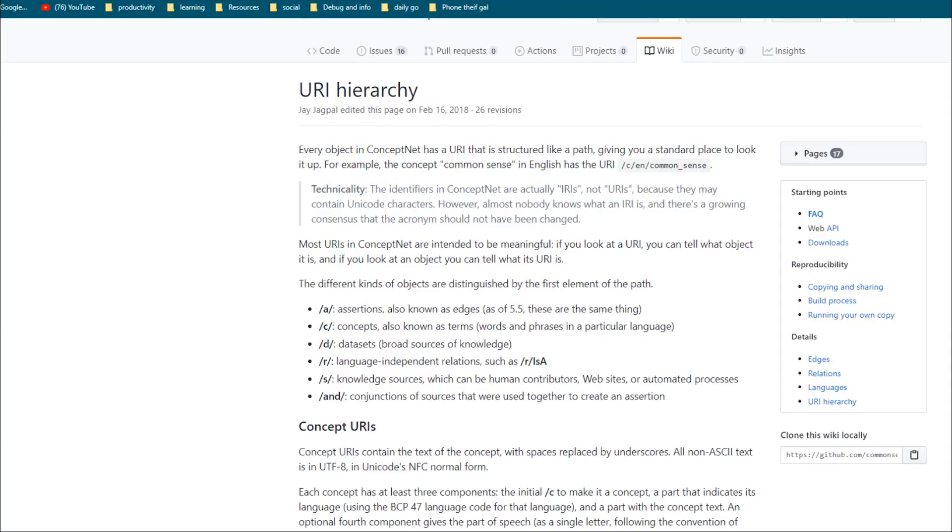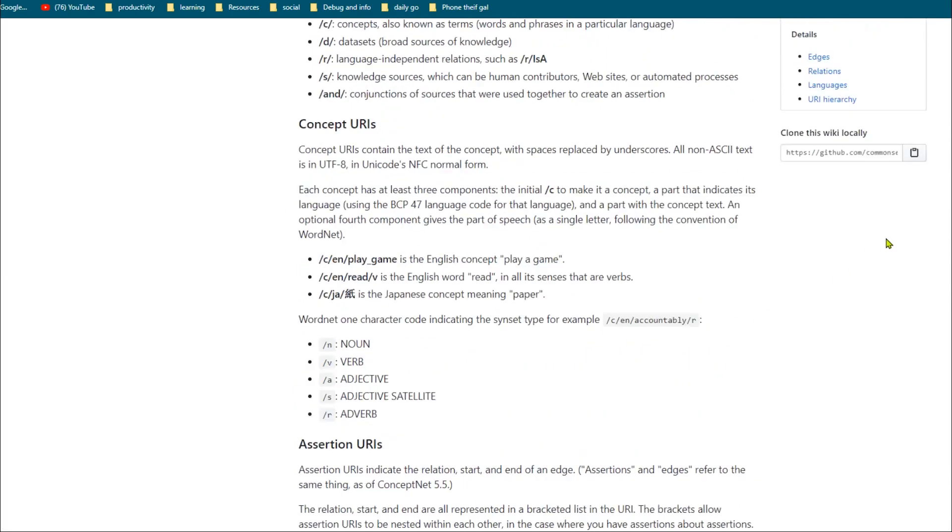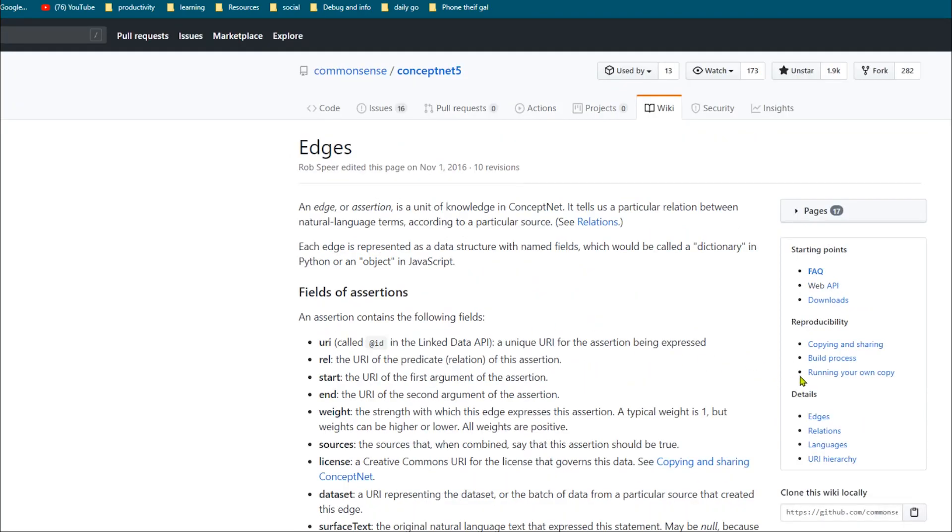Now digging a little bit deeper into ConceptNet. From the documentation, the relational graph, all the concepts, edges, and the relations of a lot of languages, but we are interested in English for this example. The graph is structured as a hierarchical representation like URI-like, path-like objects.